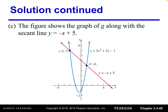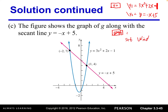If the graph doesn't show properly, you need to set the window. Here's a decent graph to demonstrate. In the Y= menu enter the given function 3x² + 2x − 1 in Y1 and the secant line y = −x + 5 in Y2. Then press Graph. If nothing shows, set the window appropriately.